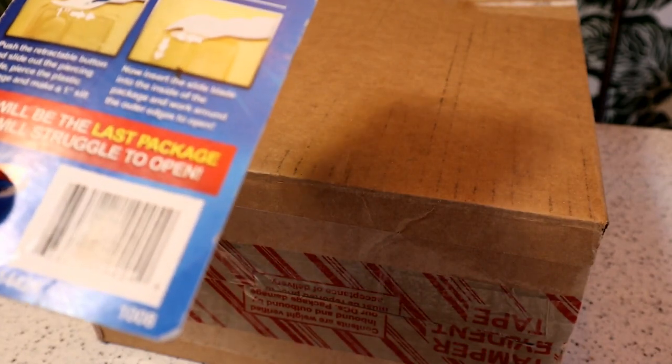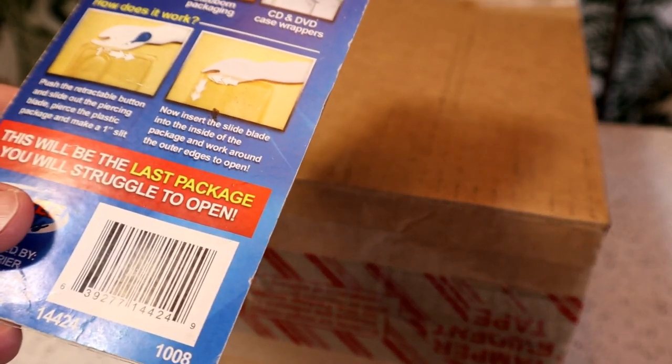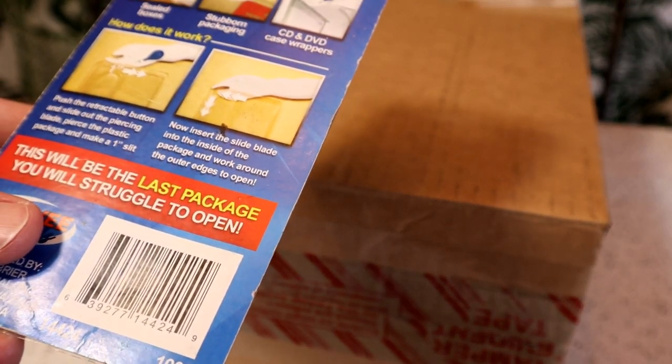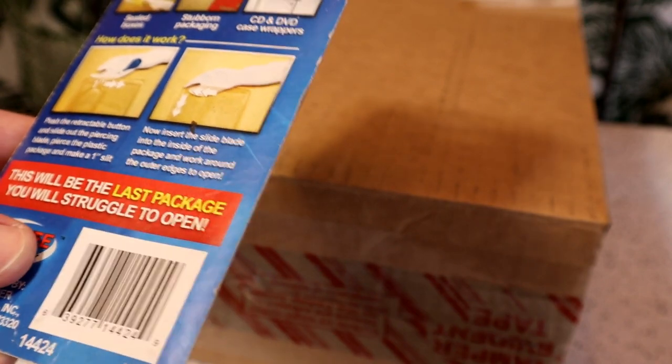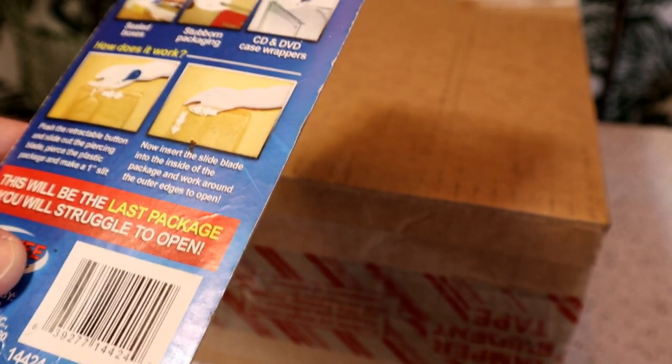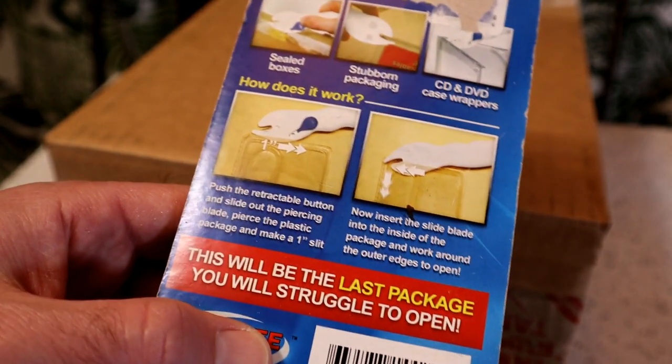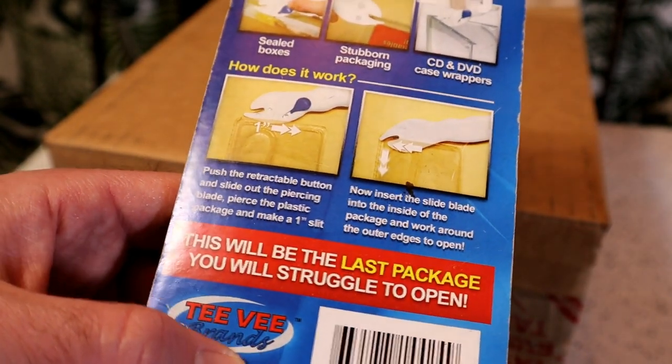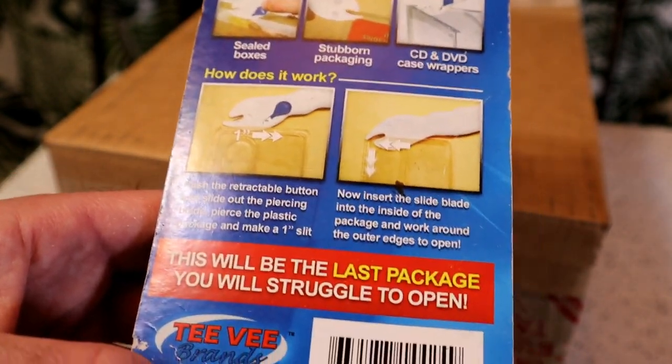Push the retractable button and slide out the piercing blade, pierce the plastic packaging making a one inch slit. Now insert the slide blade into the inside of the package and work around the outer edges to open. This will be the last package you will struggle to open.